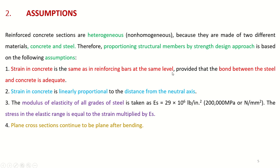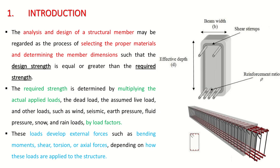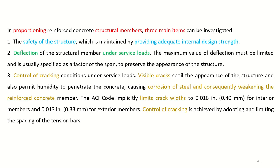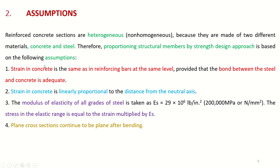Assumption 1: Strain in concrete is the same as in reinforcing bars at the same level, provided that the bond between steel and concrete is adequate. Steel is embedded in concrete and we assume the bond is almost perfect — there is no slipping — so the strain in concrete equals the strain in the reinforcing bars.